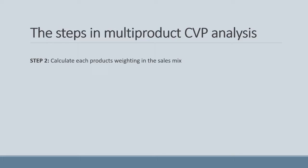Our second step is to calculate each product's weighting in the sales mix. We have two options: we can calculate it as a proportion or percentage, or we can calculate it as a ratio. With sufficient experience you'll see both methods are actually the same. However, some people understand one method better than the other. You should select one method you are comfortable with and stick to it.